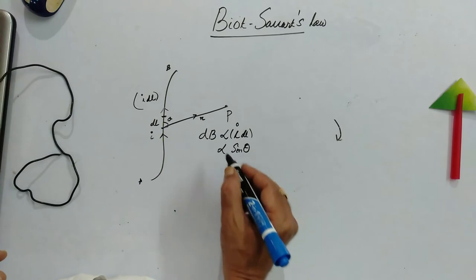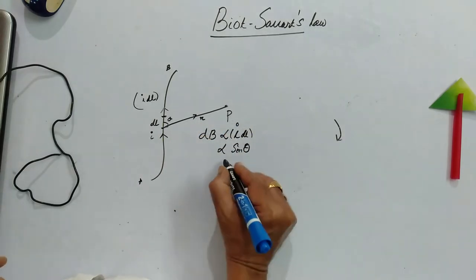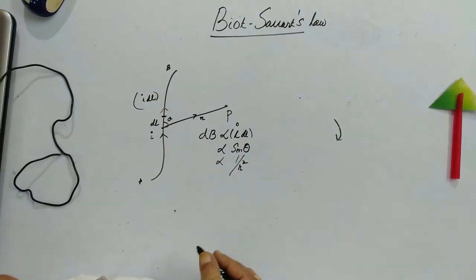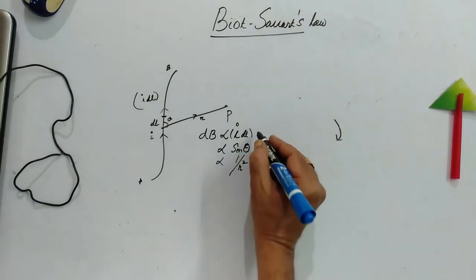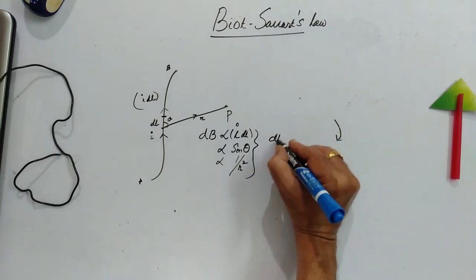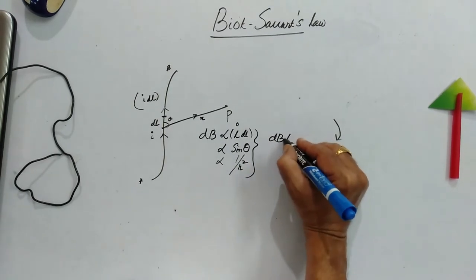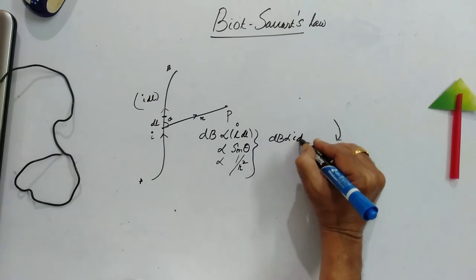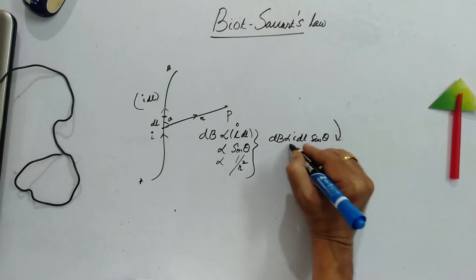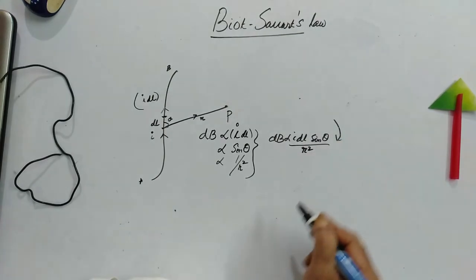This R. And then, inversely proportional to R square. Now when we combine these three results, dB is directly proportional to I dL sin theta by R square.